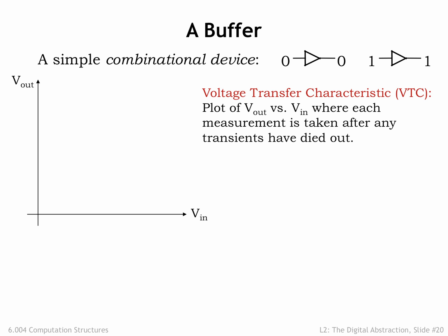The measurements will be made by setting the input voltage to a sequence of values ranging from 0V up to the power supply voltage. After setting the input voltage to a particular value, we'll wait for the output voltage to become stable — in other words, we'll wait for the propagation delay of the buffer. We'll plot the result on a graph with the input voltage on the horizontal axis and the measured output voltage on the vertical axis.